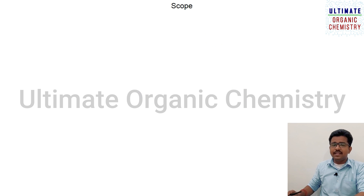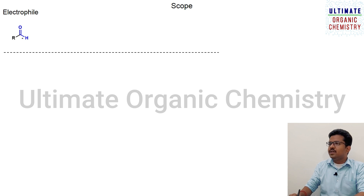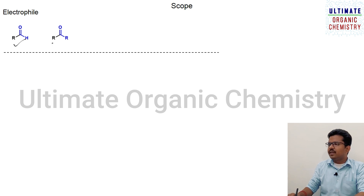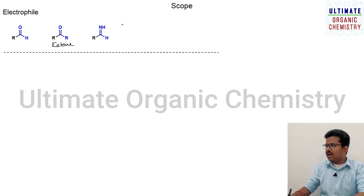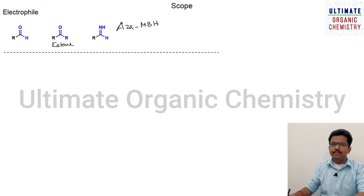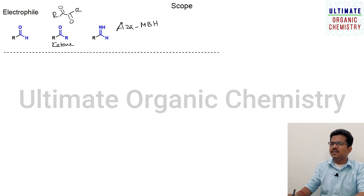Now let us discuss the scope of the Baylis-Hillman reaction, starting with the electrophile part. You can use aldehyde as an electrophile. Instead of aldehyde, you can also use ketone or imine. If you use imine as an electrophile, it is called the aza-Morita-Baylis-Hillman (aza-MBH) reaction. For ketones, it can be a simple ketone or a ketone connected to an electron-withdrawing group, such as a 1,2-diketone system. Several types of ketone can be used.